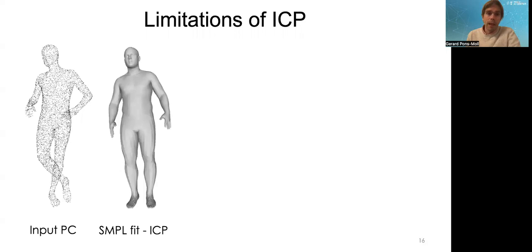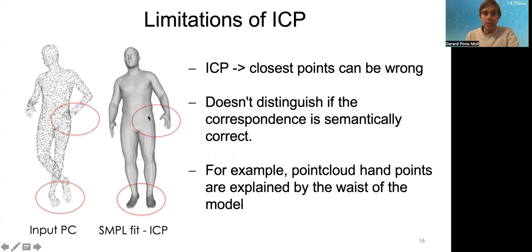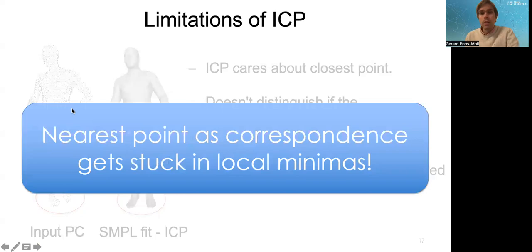By now we should not be surprised if I tell you that ICP can get stuck into local minima. Basically, ICP computes closest points, which can be wrong. For example, notice that this is the result of running ICP to fit this SMPL mesh to this registration. Notice that the legs in the point cloud are crossed, and in the registration they are not crossed. Or here, the hand is not really matching the hand of the point cloud. The reason is that the hand points of the point cloud are most likely matched against the hip points of the mesh. Therefore, you have wrong correspondences, and you have some parts of the model that are explaining the wrong parts of the data. We should not be surprised that finding nearest points and using those correspondences gets stuck into local minima.